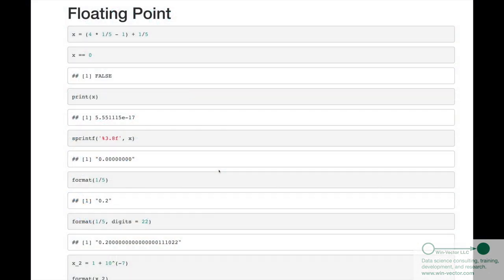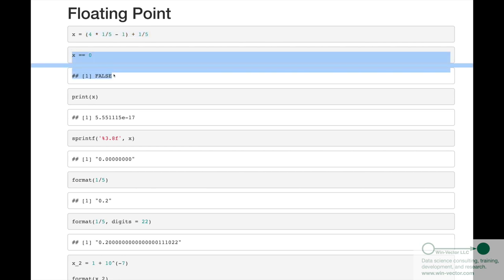Examples of floating point. For this, I'm going to use the data science or statistical platform called R, but we would see very similar results using Python or any other numeric-oriented system. So, x is zero, if algebra works right, because it's four-fifths, subtract five-fifths off, then put one-fifth back. However, notice when we check is x zero, we get false. And when we print x, we don't get zero.